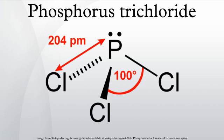Phosphorus trichloride is the precursor to organophosphorus compounds that contain one or more P atoms, most notably phosphites and phosphonates. These compounds do not usually contain the chlorine atoms found in PCl3.